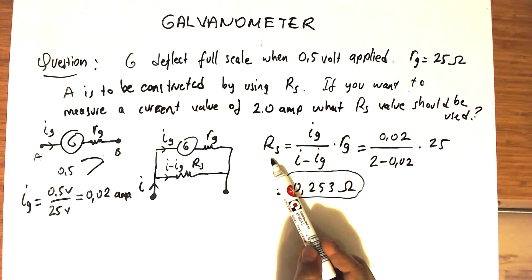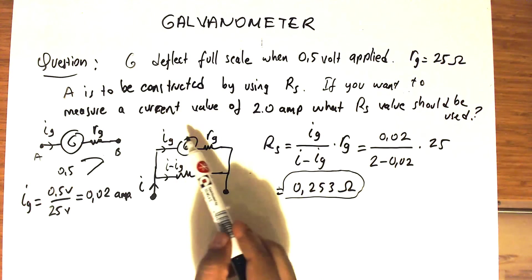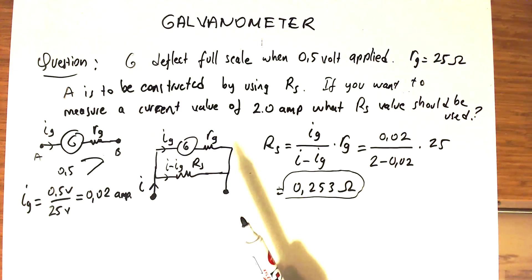So you should use this much resistance in order to use this galvanometer as an ammeter.